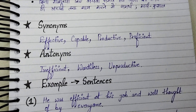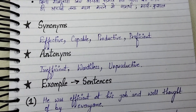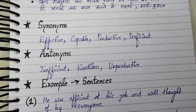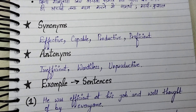Synonyms of efficient are: effective, capable, productive, and proficient. Antonyms of efficient are: inefficient, worthless, and unproductive.